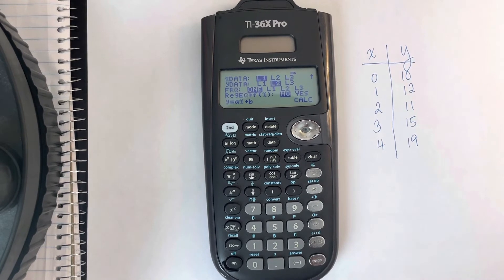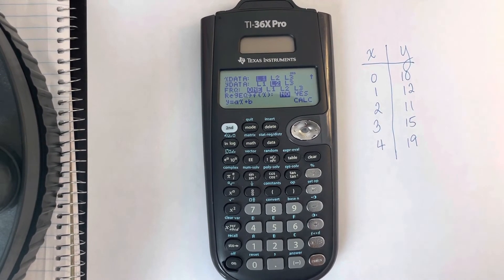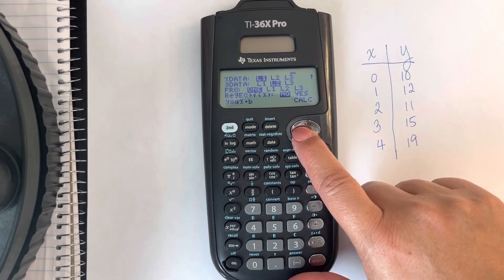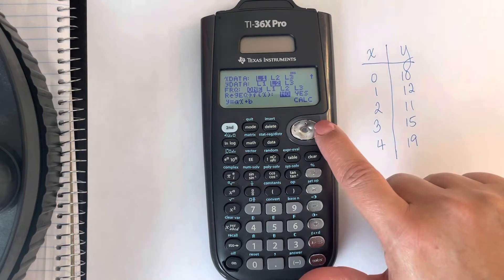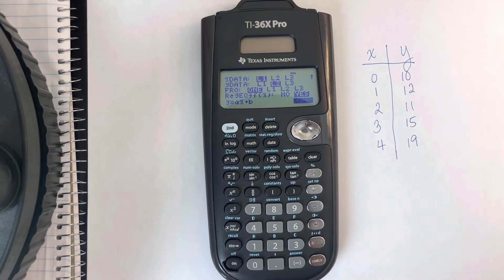So we're going to hit Linear Regression. Our x data is in list 1. Our y data is in list 2. We're going to keep the frequency at 1. We could ask for the regression equation to be stored or not. It doesn't matter.